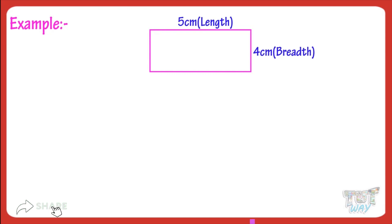Now let's take another example. Here we have another rectangle with its length and breadth mentioned. Length is 5 cm, breadth is 4 cm. Now let's find its parameter. We know parameter is 2 multiplied by the sum of length and breadth.